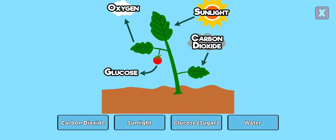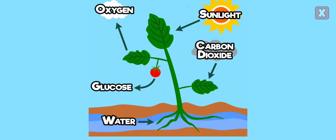What part of the process of photosynthesis is missing? Yes! Water was missing. Without water, plants can't do photosynthesis and will eventually die.